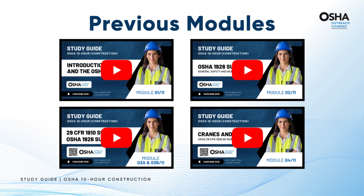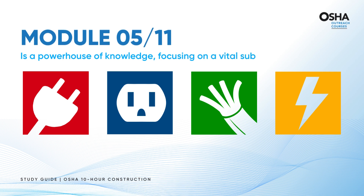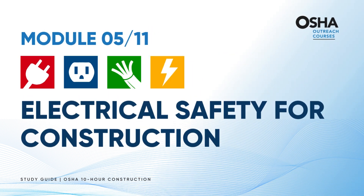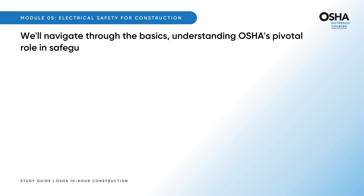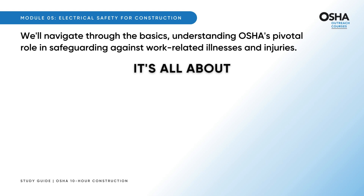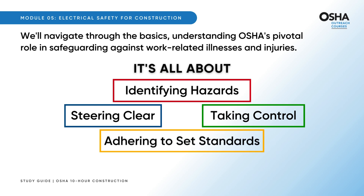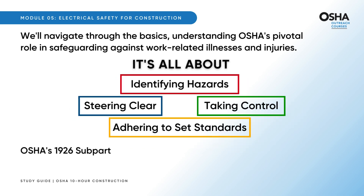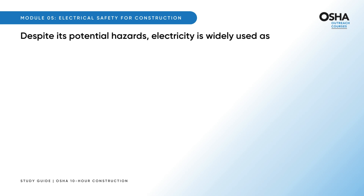Module 5 is a powerhouse of knowledge focusing on a vital subject: electrical safety for construction. Here we'll navigate through the basics, understanding OSHA's pivotal role in safeguarding against work-related illnesses and injuries — identifying hazards, steering clear, taking control, and adhering to set standards. OSHA's 1926 Subpart K Electrical focuses on ensuring the safe usage of electricity despite its potential hazards. Electricity is widely used as a power source in various industries.